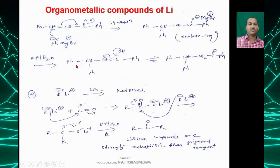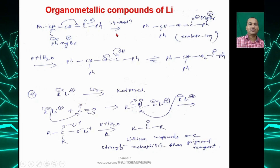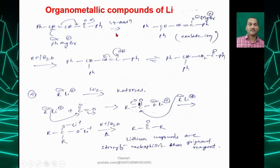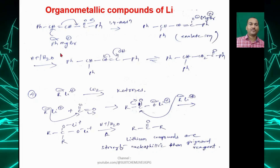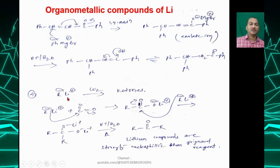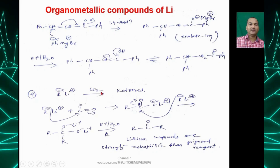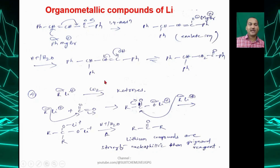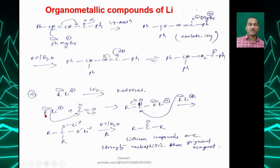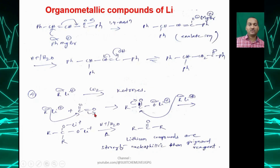Organolithium compounds undergo 1,2-addition reactions. Alkyl lithium can also react with carbon dioxide: R⁻ reacts with CO₂, attacking the carbonyl carbon.